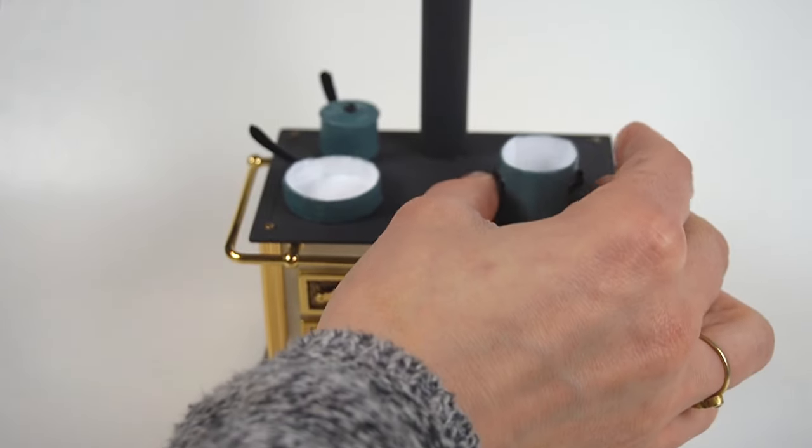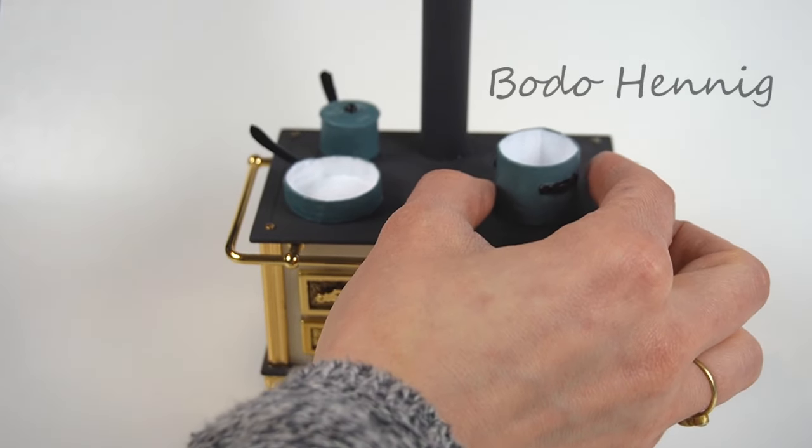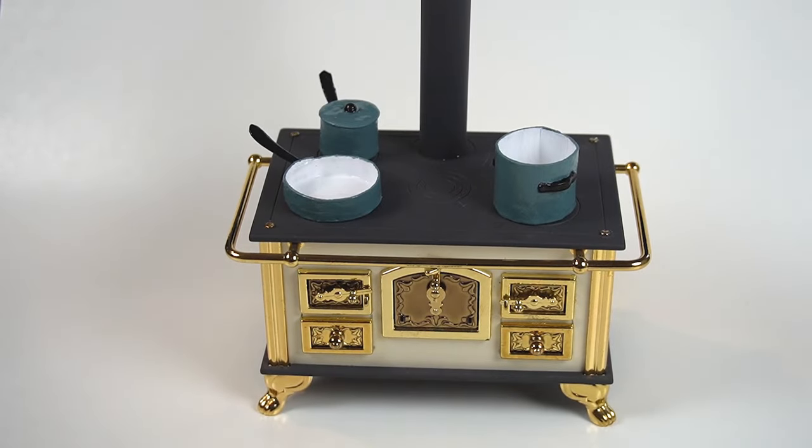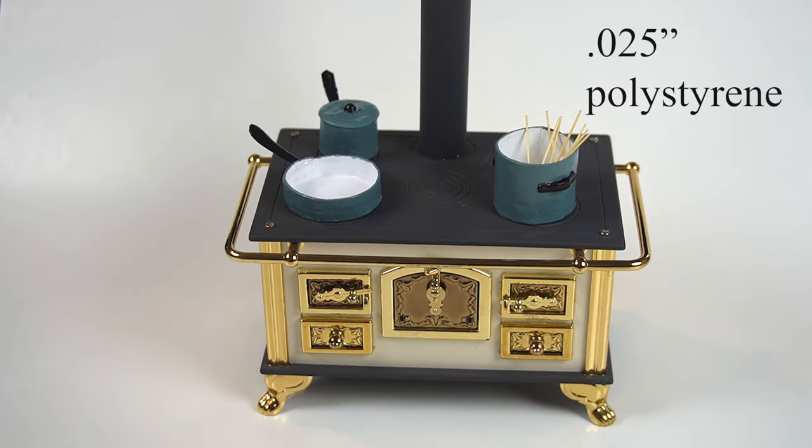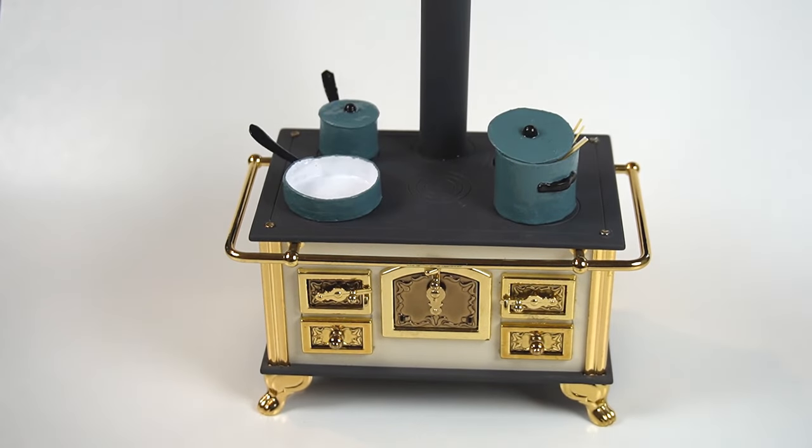If anyone is curious this is a vintage German Bodo Hennig stove and I made my spaghetti using some really thin pieces of styrene painted yellow. Bye bye.